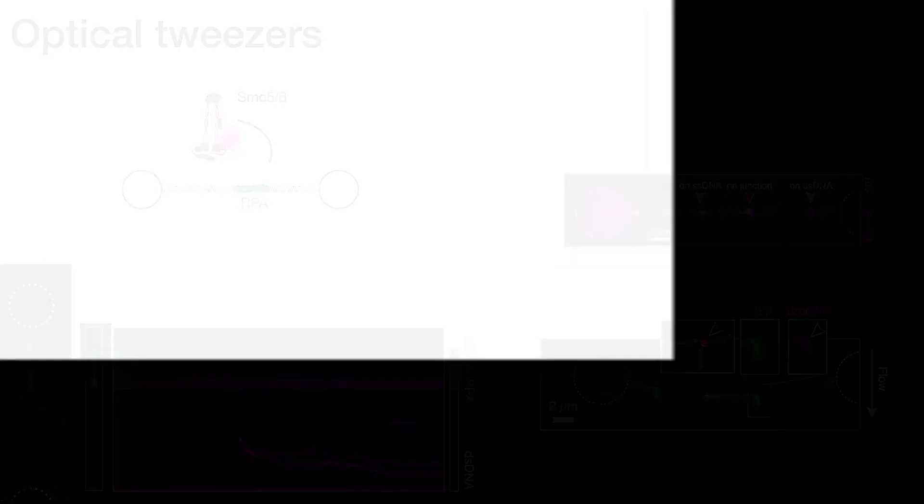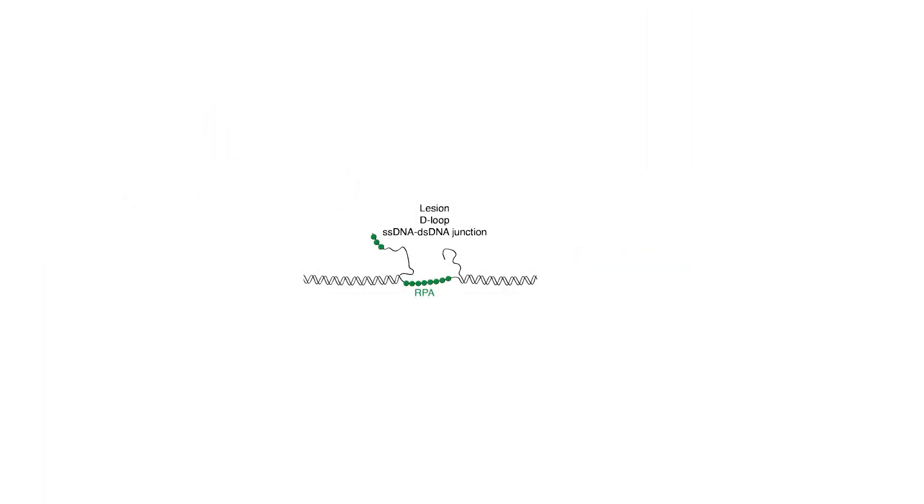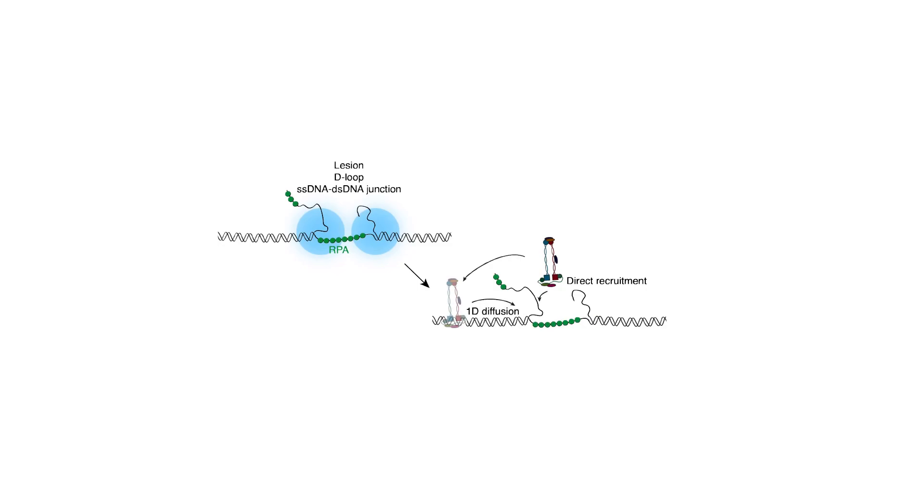This brings me to our model. What we showed was that relevant substrates for SMC56, such as lesions, D-loops, and single-stranded, double-stranded DNA junctions, SMC56 gets recruited through these junctions either through direct recruitment from solution or, as we've shown, through 1D diffusion on double-stranded DNA until SMC56 complexes encounter these double-stranded, single-stranded DNA junctions.